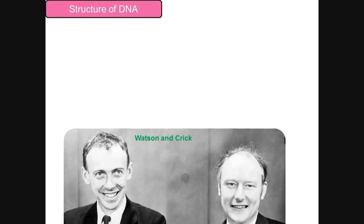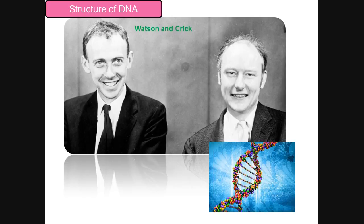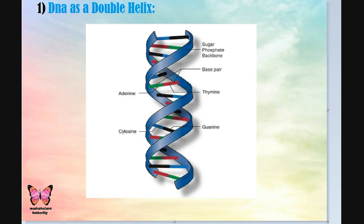James Watson and Francis Crick proposed the DNA structure based on X-ray crystallographic studies. According to Watson and Crick, the model of DNA is a double helix — a helical structure which is supercoiled around itself. As you can see in the diagram, it has a sugar-phosphate backbone attached at the ends of the rungs.